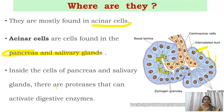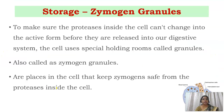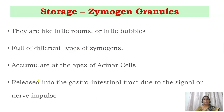Inside the cells of the pancreas and salivary glands there are proteases that can activate the digestive enzymes. These digestive enzymes are enclosed in zymogen granules, which are special holding compartments that keep the zymogens safe from proteases inside the cell. The zymogen granules accumulate at the apex of the acinar cells and are released into the gastrointestinal tract in response to a signal or nerve impulse.